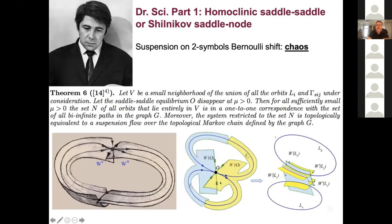In the case when there are more than one connection, the stable manifold bends and crosses the unstable manifold at two points, each corresponding to a periodic orbit. As the saddle-node disappears, there will be a hyperbolic subset topologically equivalent to the suspension of the Bernoulli subshift on two or n symbols, depending on the number of connections. If you have three connections, it's a three-symbol Bernoulli shift flow. That's how we envision this saddle-node bifurcation in the case of two connections.